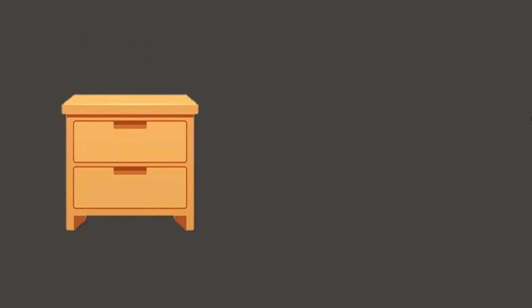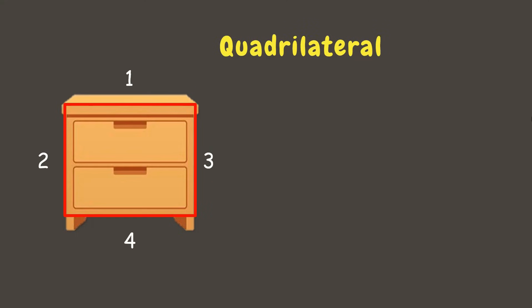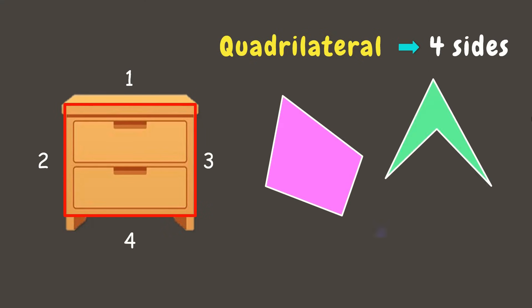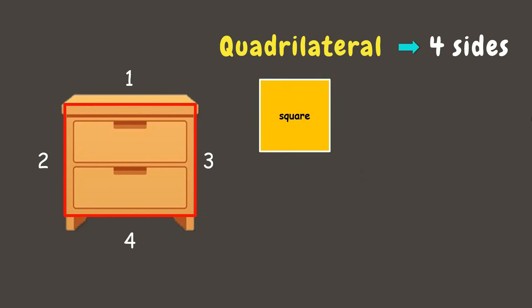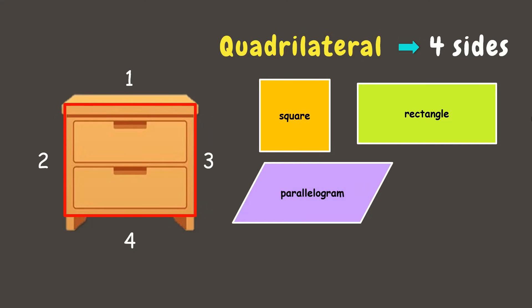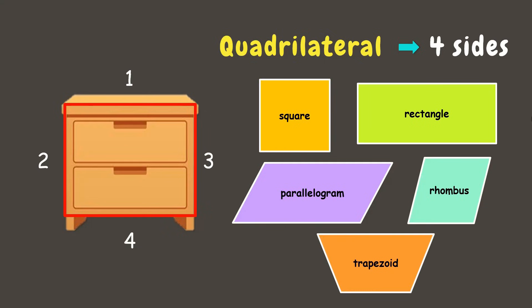Next we have a drawer. This object forms a polygon with four sides and it is called a quadrilateral. A quadrilateral has four sides and four angles. Here are other examples of quadrilaterals. Other quadrilateral superheroes are square, rectangle, parallelogram, rhombus, trapezoid, and many more.